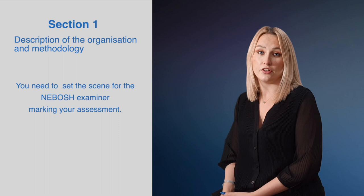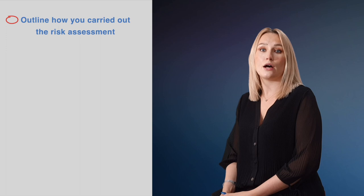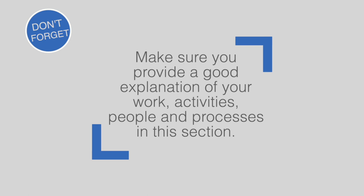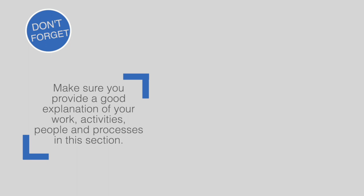You will need to outline how you carried out the risk assessment, including the sources of information you used, who you spoke to as part of the risk assessment process, and how the hazards and controls were identified, as well as anything else relevant to the assessment. Make sure you provide a good explanation of your work, activities, people and processes in this section. You are painting a mental picture for the examiner, and the clearer this is, the better understanding they have of your work to be able to mark the assessment. Provide good detail on the methodology used, as this will show the examiner you understand clearly the process of undertaking a risk assessment.